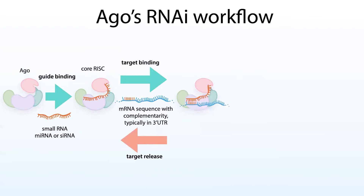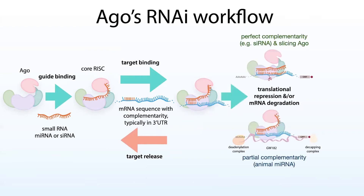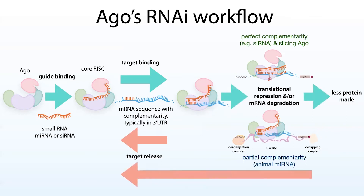Upon binding, Ago is able to, along with the help of cofactors, induce translational repression and/or mRNA degradation in ways that we'll get into. The end result is that less of the corresponding protein is made, and then the target can be released.